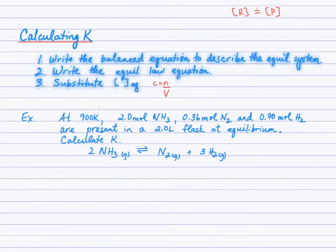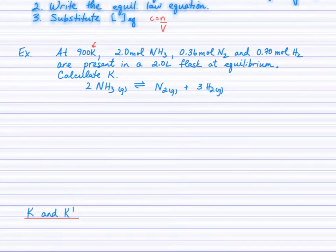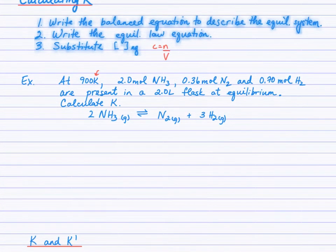At 900 Kelvin, this K right here is Kelvin for temperature, 2.0 moles of ammonia, 0.36 moles of nitrogen gas, and 0.70 moles of H2 are present in a 2-liter flask at equilibrium. We're being given the number of moles of each substance in that particular volume at equilibrium. So we can use the moles and the volume to calculate the concentrations at equilibrium, and then we can calculate K.